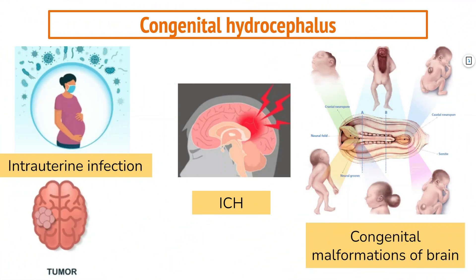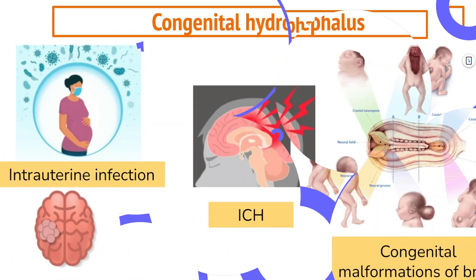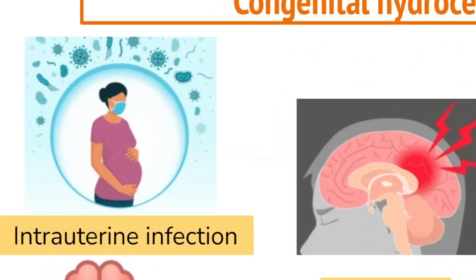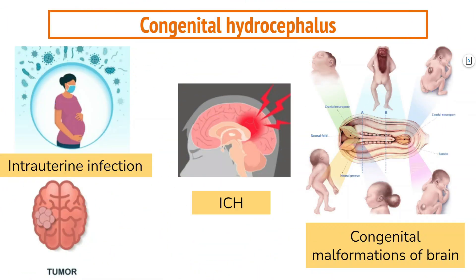Congenital hydrocephalus is one of the most common congenital anomalies of the central nervous system. It is present at birth and may be caused by events that occur during fetal development or as a result of genetic abnormalities. This type of hydrocephalus is caused by intrauterine infection, mainly rubella, toxoplasmosis, and CMV, as well as tumours, intracranial hemorrhage, congenital malformation of the brain, and malformation of the arachnoid villi.